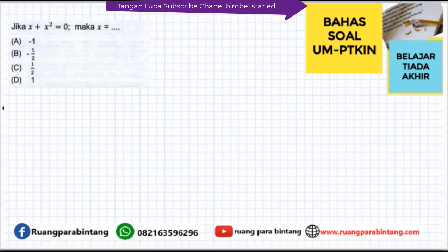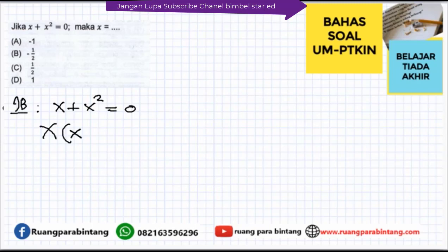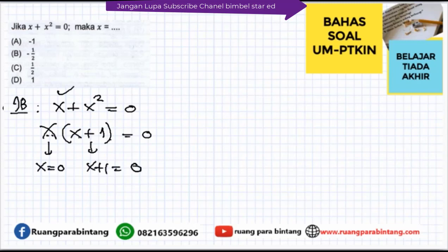Soal berikutnya: Jika x + x² = 0, maka x sama dengan minus 1, minus ½, ½, atau 1? Kita faktorkan: x(x+1) = 0. Maka x = 0 atau x+1 = 0, sehingga x = −1. Dari pilihan yang tersedia, yang ada hanyalah −1. Jadi jawabannya adalah opsi A.